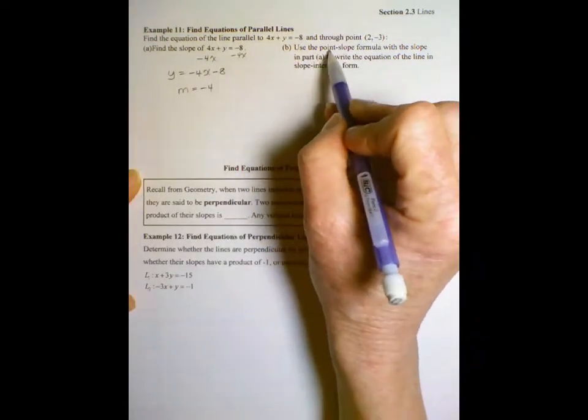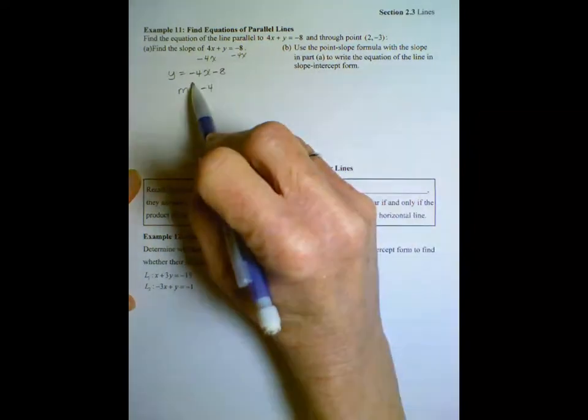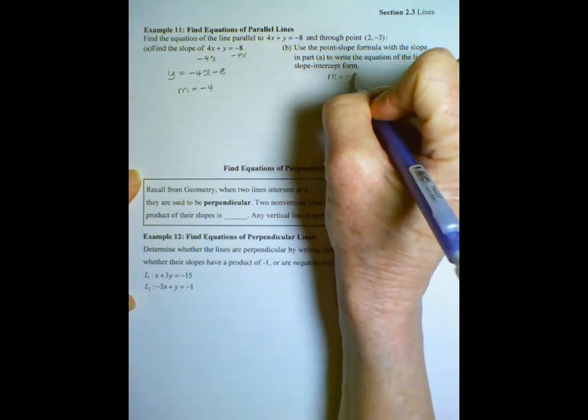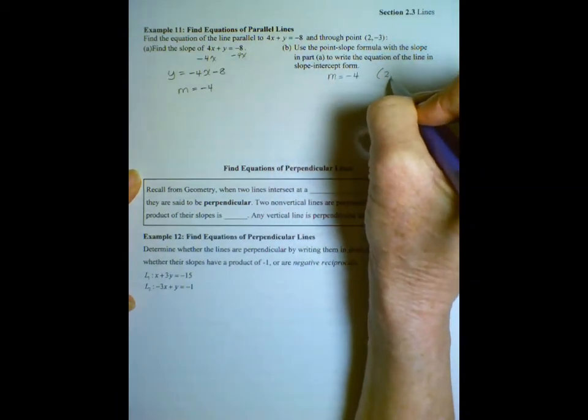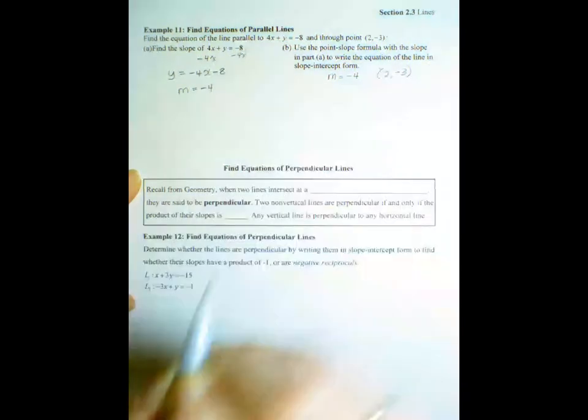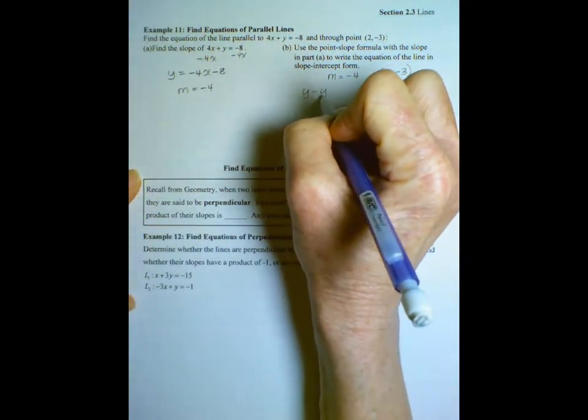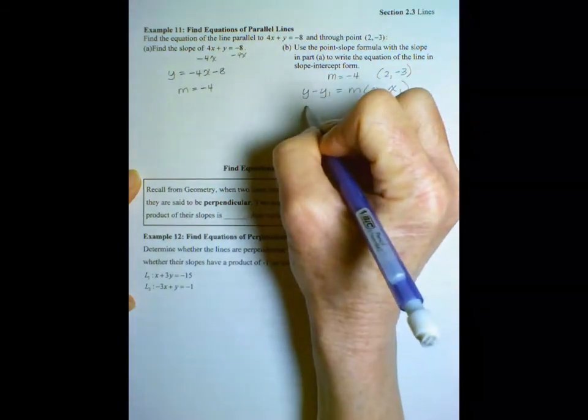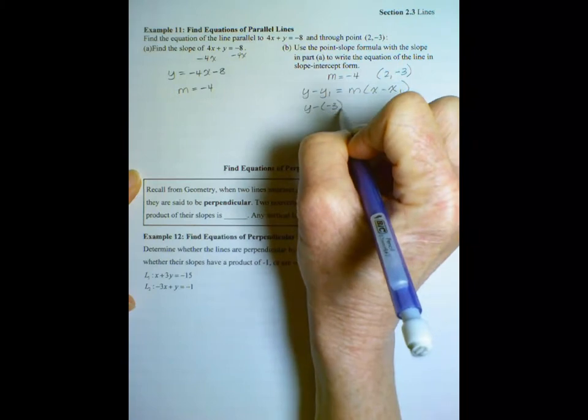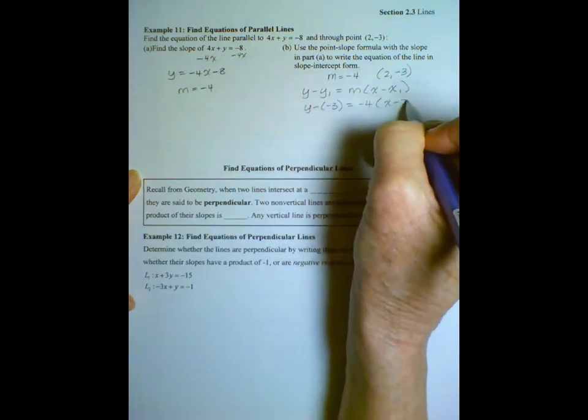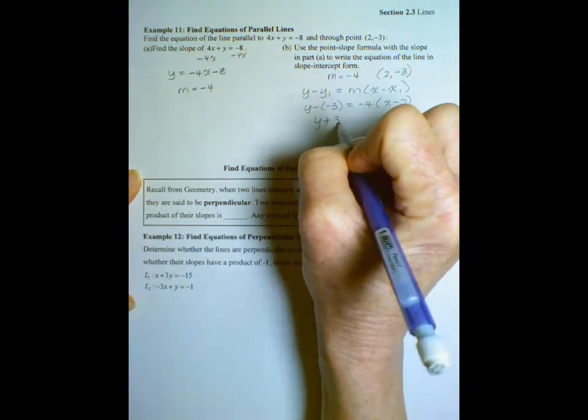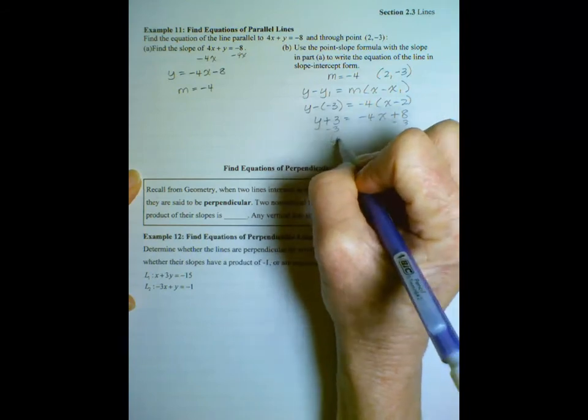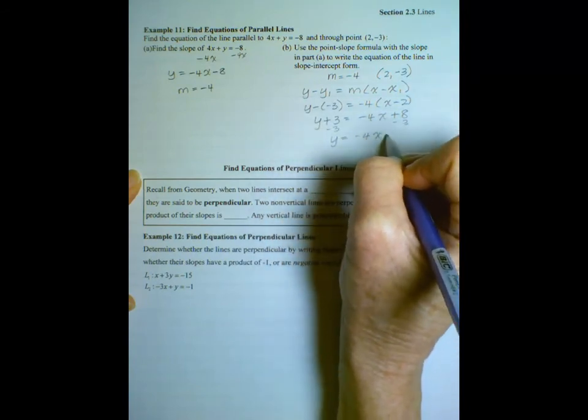Then it says use the point-slope formula with the slope in part A to write the equation of the line. So now we know we need a slope of negative 4 and this line we're writing an equation for has to pass through that point. That's our y minus y1 equals m times x minus x1. Y minus negative 3 equals negative 4 times x minus 2. Y plus 3 equals negative 4x plus 8. Subtract 3 and we get y equals negative 4x plus 5.